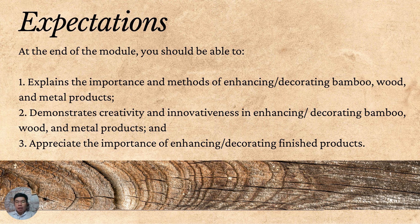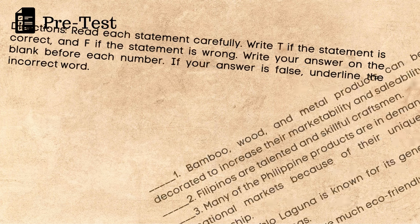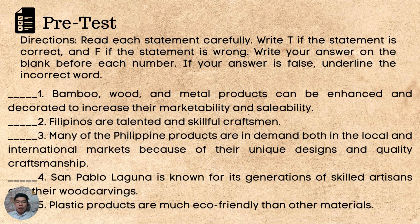Before we go on to the lesson proper, please take the pre-test. Directions: Read each statement carefully. Write T if the statement is correct, and F if the statement is wrong. Write your answer on the blank before each number. If your answer is false, underline the incorrect word. TLE learners, please get your TLE 6 notebook and write your answers there. If you are not yet done with this slide, you may pause the video, then continue when finished.